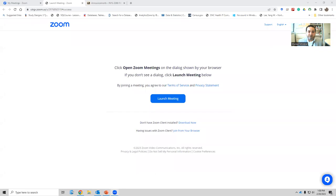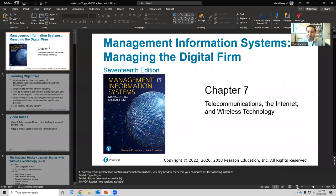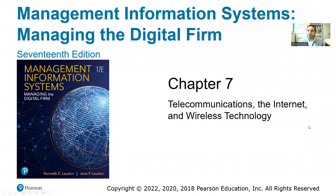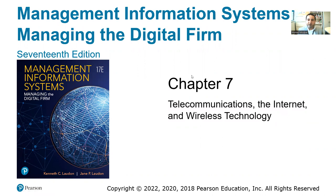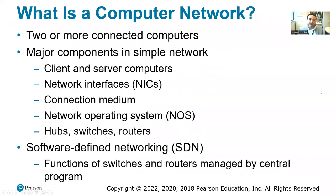Hi everyone. In this video, we are going to go over Chapter 7, which is about computer networks, including telecommunications, the internet, and wireless technology. A computer network refers to two or more connected computers in order to share information or exchange messages, whether text, files, videos, and so on.